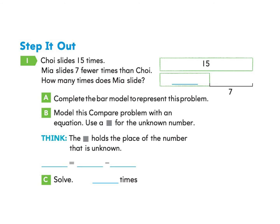Let's look at page 340. Choi slides 15 times. Mia slides 7 fewer times than Choi. How many times does Mia slide? Complete the bar model — we have the total 15 that Choi slides, and Mia slides 7 fewer times. Starting with 7 and counting on to 15: 8, 9, 10, 11, 12, 13, 14, 15. The difference between 7 and 15 is 8.